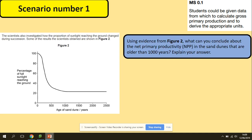Another typical question we could have here, the graph that shows you information about the percentage of full sunlight reaching the ground. Then you've got the age of St. June, and you've got the question that tells you that scientists also investigated how the proportion of sunlight reaching the ground changed during succession. Some of the results the scientists obtain are shown in figure 2. As we can see here, the full percentage of the sunlight was for the beginning, then decreased and levels off.